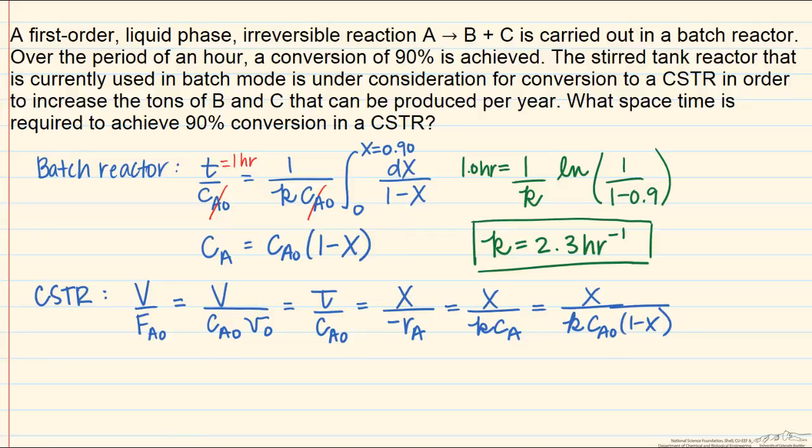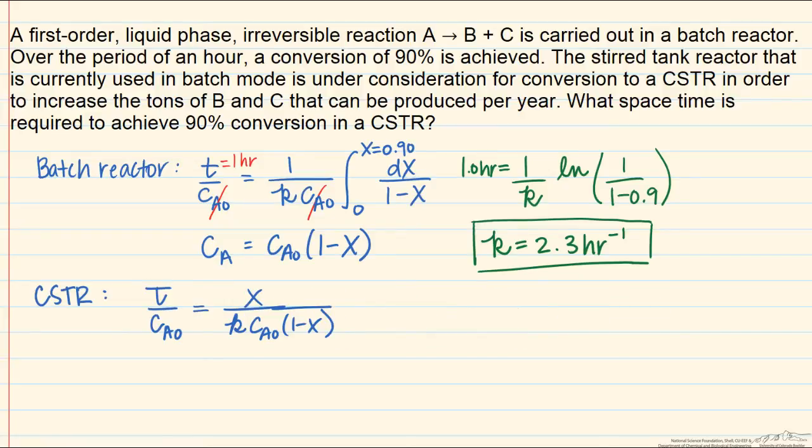The reason it follows the same form is that we have a constant density system, where because it's a liquid phase system, the change in the number of moles during the reaction doesn't matter. So we expect that the concentration of A will just depend in this simple way on conversion. Now that we've applied all of these three steps, we can check on what our unknowns are.